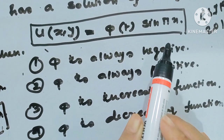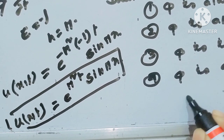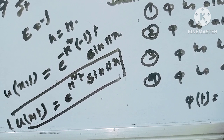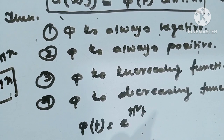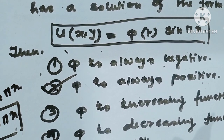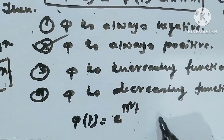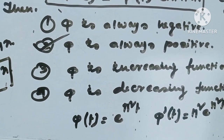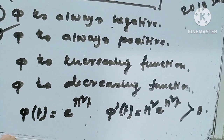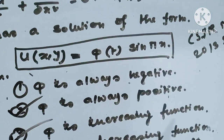Notice the solution u(x,t) = φ(t) * sin(πx), so φ(t) = e^(π²t). Obviously e^(π²t) is always positive, so φ is always positive — option 2 is correct. Also, φ'(t) = π² * e^(π²t), which is strictly greater than 0, so φ is an increasing function — option 3 is also correct. Both option 2 and option 3 are correct answers.